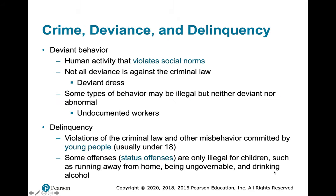We start with the difference between terms like crime, deviance, and delinquency. Deviant behavior is human activity that violates social norms. Not all deviance is against the law — social norms are just customary ways of behavior, such as dressing inappropriately for the place you're in. Some behavior may be illegal but neither deviant nor abnormal; for example, undocumented workers — that is actually a civil infraction, not criminal.